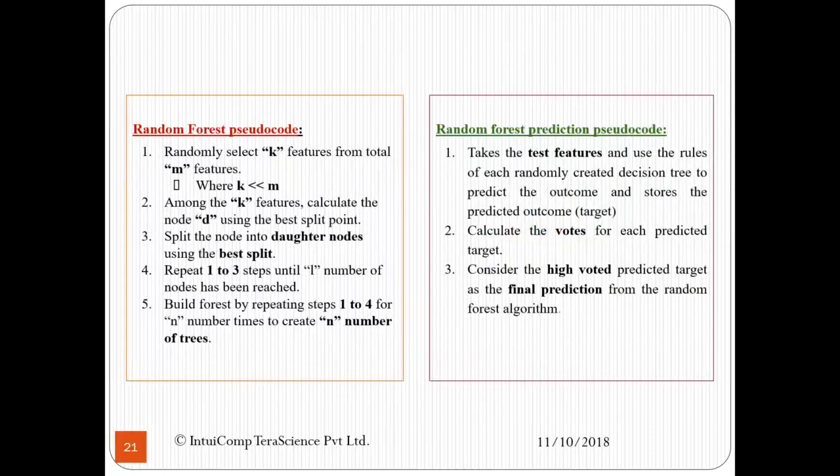Now let us see the pseudocodes for these two parts of a random forest. For random forest pseudocode, the first step is randomly select K features from total M features, where K less than M. Among the K features, calculate the node D using the best split point. Split the node into daughter nodes using this best split. Repeat 1 to 3 steps until L number of nodes has been reached. Build forest by repeating steps 1 to 4 for N number of times for N number of trees.